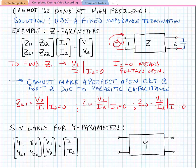z21 is the transimpedance of the structure: v2 over i1 when i2 is equal to 0. z12 is the reverse transimpedance of the structure: v1 over i2 when i1 is equal to 0. And z22 is the output impedance of the structure: v2 over i2 when i1 is equal to 0.